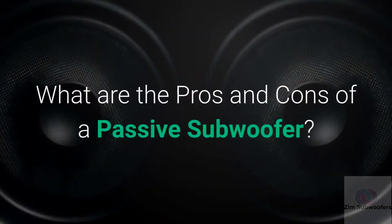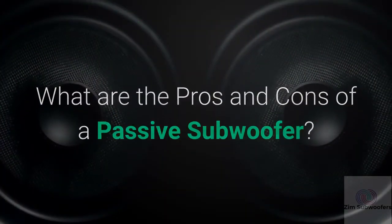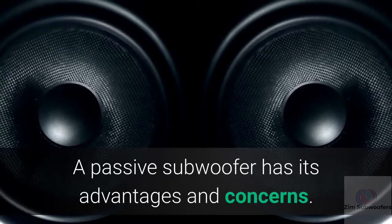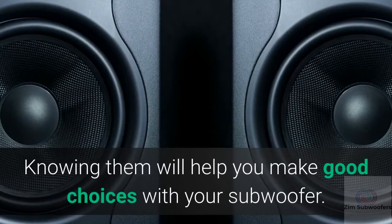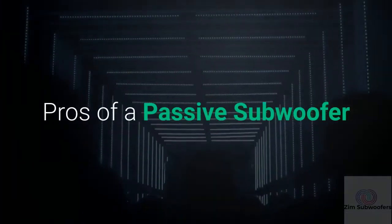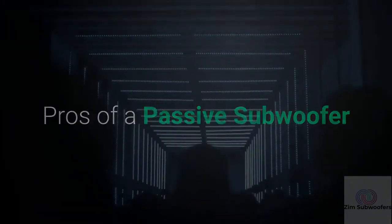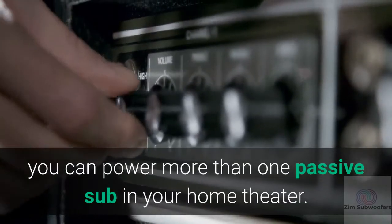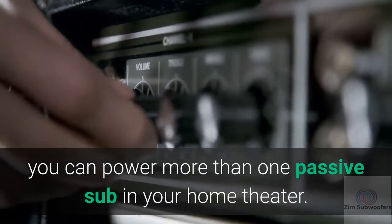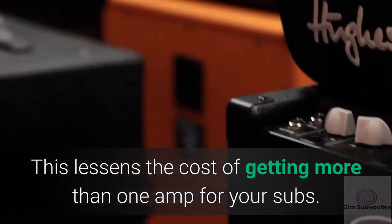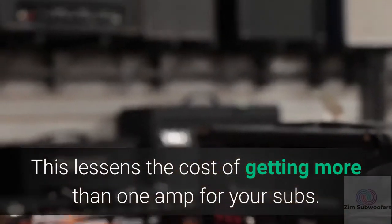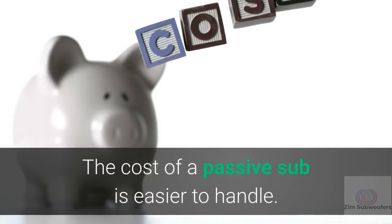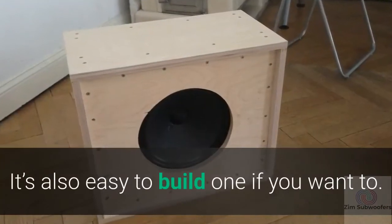What are the pros and cons of a passive subwoofer? A passive subwoofer has its advantages and concerns. Knowing them will help you make good choices with your subwoofer. Pros of a passive subwoofer: With an amplifier that has many channels on it, you can power more than one passive sub in your home theater. This lessens the cost of getting more than one amp for your subs. The cost of a passive sub is easier to handle. It's also easy to build one if you want to.